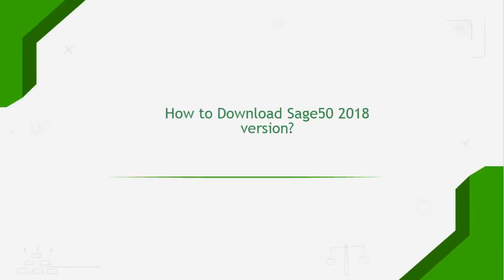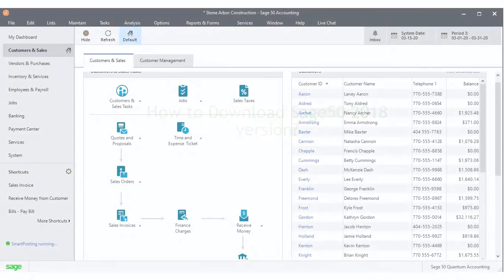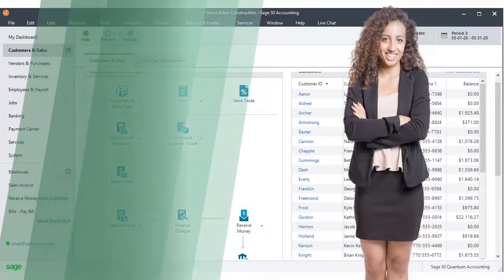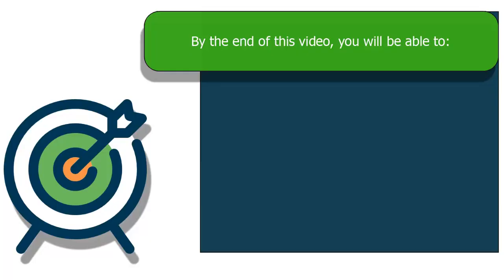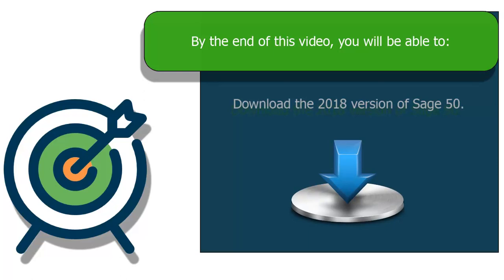Welcome to this tutorial. In this tutorial, you will learn how to download an earlier version of Sage 50. Hi, I'm Adriana. I will walk you through this training. In this video, we will learn how to download an earlier version of Sage 50. This is a task that we generally perform to open older files only. Remember that Sage 50 has a new version every year. This year, the version is called 2021.